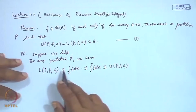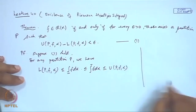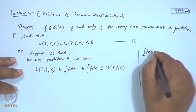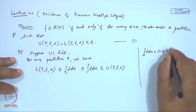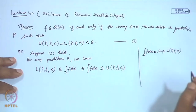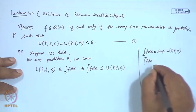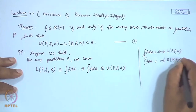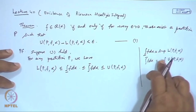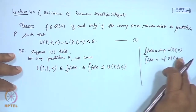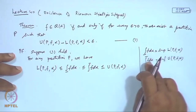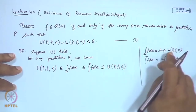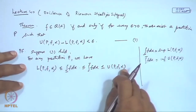We have already discussed how to define the lower and upper Riemann-Stieltjes integrals. The lower integral is the supremum of L(P,f,α) and the upper integral is the infimum of U(P,f,α). If we remove infimum and supremum, the upper sum is always ≥ the upper integral and the lower sum is always ≤ the lower integral. This holds for any partition P.